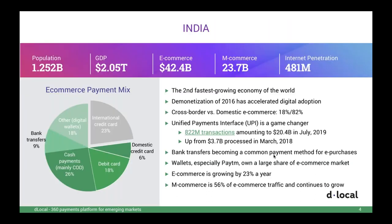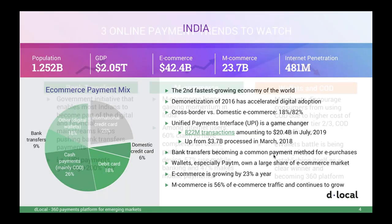Let's start with the payments landscape in India. India, as probably most of you know, is the second largest economy in the world after China, and also the second largest in terms of population. It's still very early days for cross-border e-commerce in India, with a lot to grow. The e-commerce payment mix is split between international credit cards, domestic cards, wallets, bank transfers, and cash on delivery. We'll also talk about UPI and how it became a game changer over the last three years, and relevant aspects of e-commerce and mobile commerce in India.